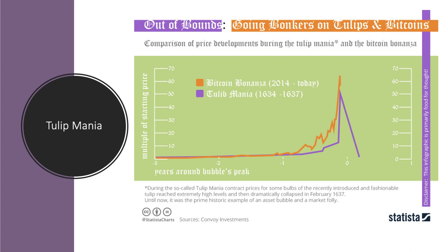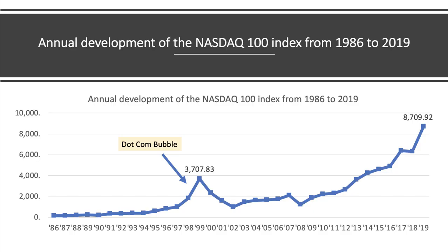Many economists go back to tulip mania in the mid 17th century. During the so-called tulip mania, the contract price for some tulip bulbs — the recently introduced and highly fashionable tulip — reached extremely high levels, as shown in the chart, but then dramatically collapsed in the early spring of 1637. For many economists it's the first fairly well-documented asset price bubble in history and is regarded as a big example of the folly of investors. However, recent research has found the actual number of investors actively involved in tulip mania was extremely small compared with speculative bubbles in property and equity markets in more recent times.